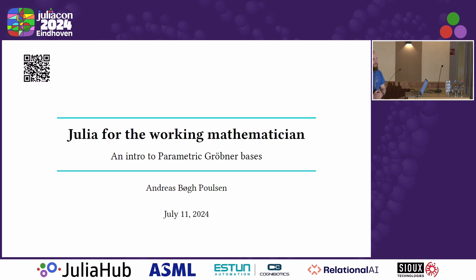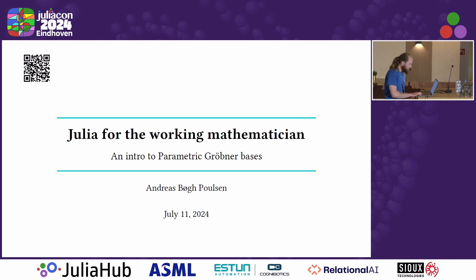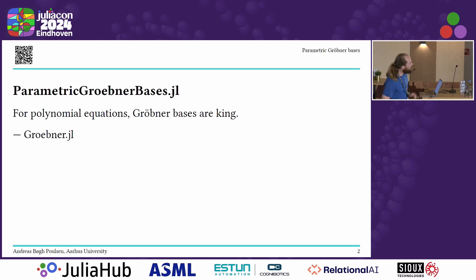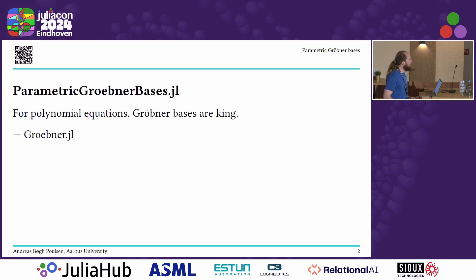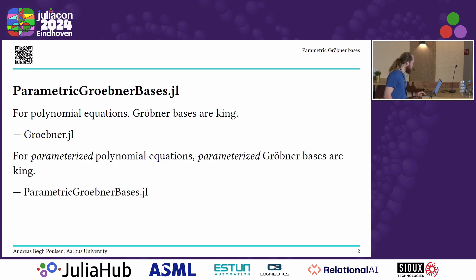Julia obviously has a lot of capabilities in numeric computing, solving ODEs and all that kind of stuff. I wanted to show you a little bit about what we can do with the symbolic capabilities that Julia also has. When we're working with polynomial equations, Gröbner bases are king, and we have a wonderful package in Julia called Gröbner.jl, which can compute Gröbner bases of polynomial ideals. However, sometimes our polynomial equations have parameters, and Gröbner.jl doesn't account for this.